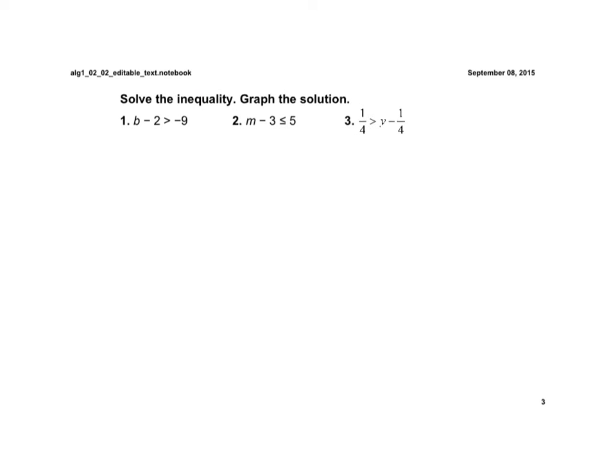So, if we look at this, we have b minus 2 is greater than negative 9. Well, this first one, if I want to get rid of the negative 2, I'm just going to add 2 to each side, just like we've been doing when we've solved equations. So, we get b, the negative 2 and the positive 2 cancel out, is greater than negative 9 plus 2, different signs subtract.